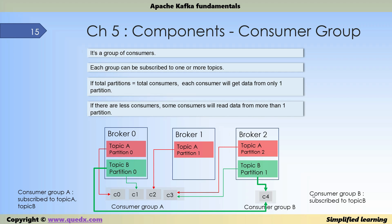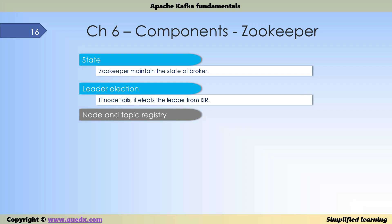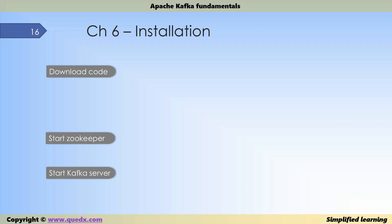ZooKeeper has several functions in Kafka. It assists in leader election — when a node goes down, ZooKeeper uses the in-sync replicas (ISR) to determine which ISR partition will be elected as the new leader. ZooKeeper also maintains a node and topic registry, storing information about the nodes and topics for the cluster.